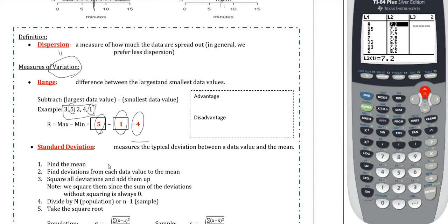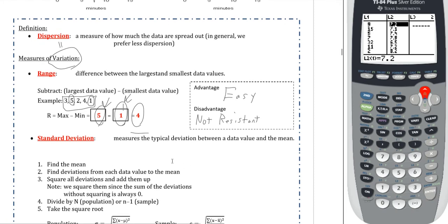The main advantage of range is that it's easy — incredibly easy to do, takes probably no time at all, and for most data sets you can do it without a calculator. The disadvantage is that it is not resistant, because extreme values are typically either the maximum or the minimum, so if extreme values are influencing the data set, they're likewise going to influence the range a lot. Furthermore, it's only using two numbers from the data set — the maximum and the minimum — so it's not using as much of the data as you have collected. So it's got a lot of disadvantages, and the easier things tend to not be that good.